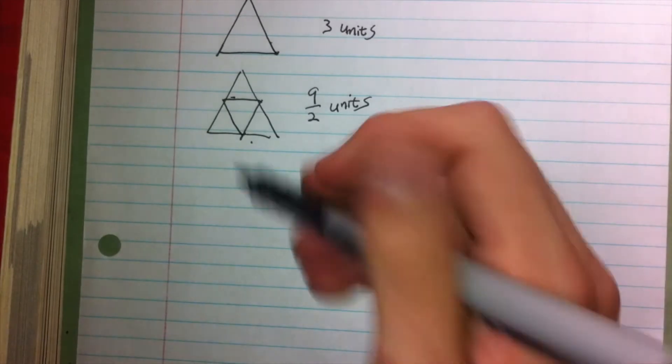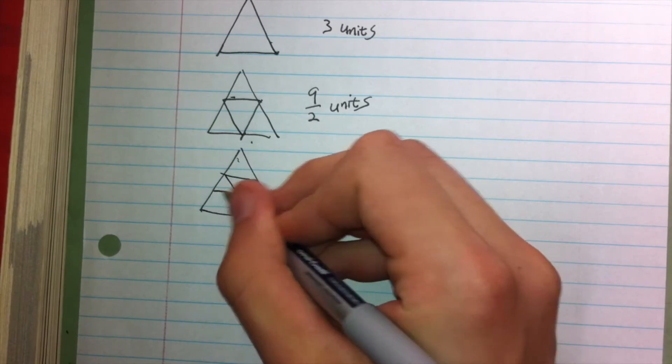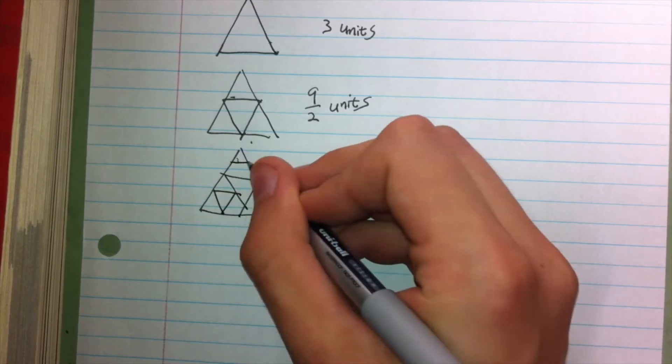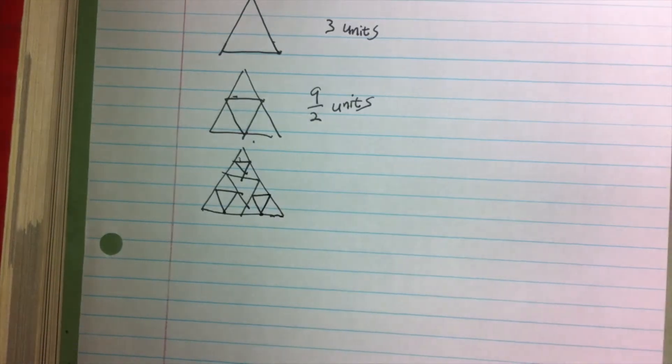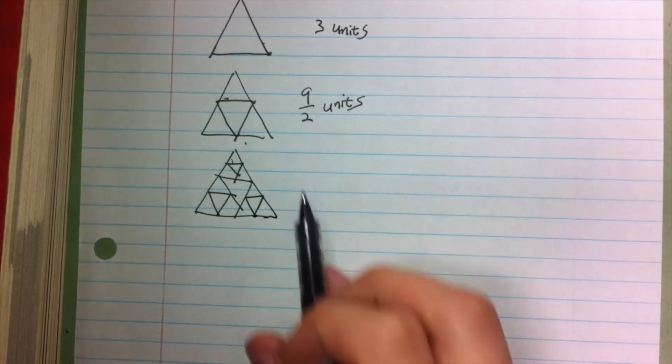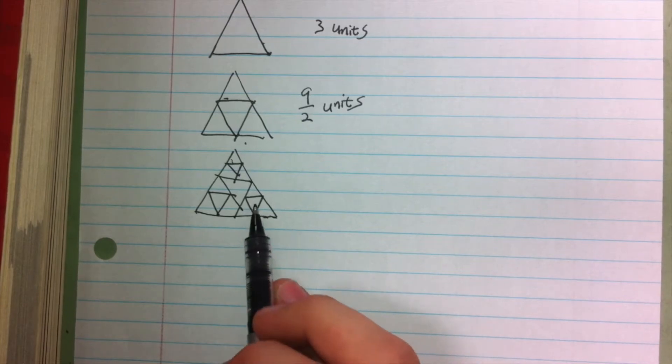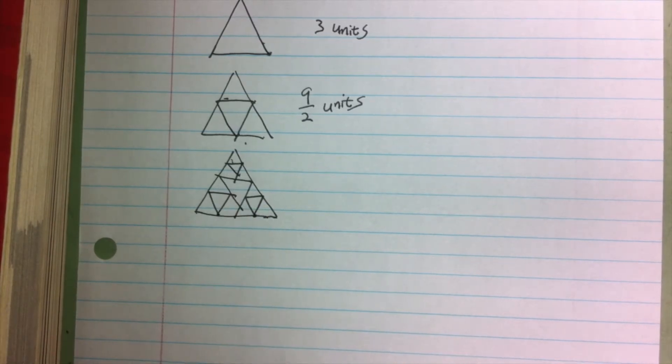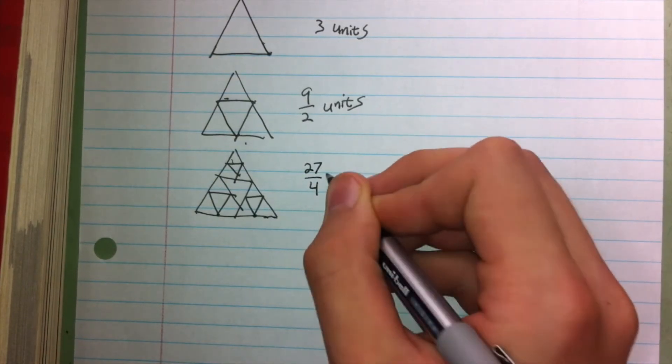And then for the next iteration, we have a similar thing, where each of those half-units are split into quarter-units. And so what we have is those nine half-units are split into 18 quarter-units, and we've added three, six, nine more quarter-units to that, and so we have 27 quarter-units.